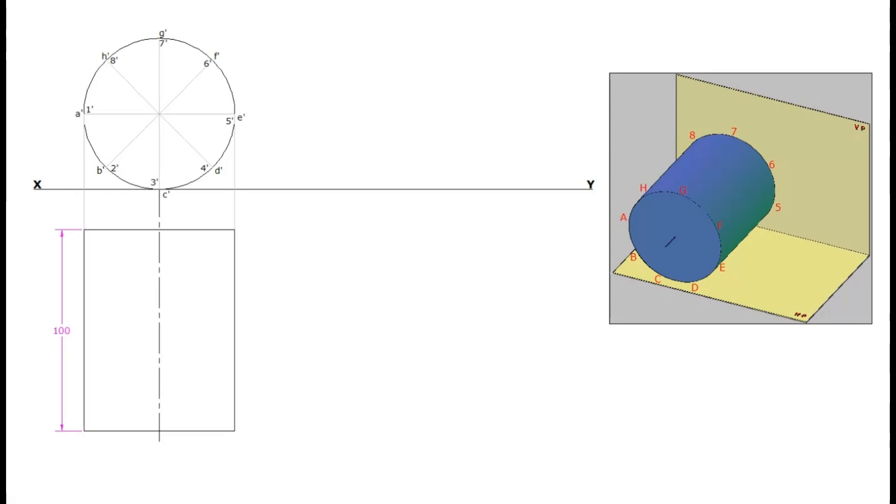Now project all the divisional points of the front view and mark the corresponding points in the top view. Rear base points are 1, 2, 3, 4, 5, 6, 7, and 8. The front base points are A, B, C, D, E, F, G, and H.